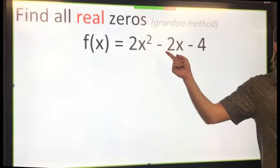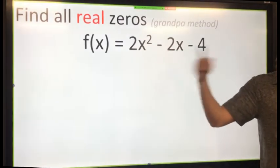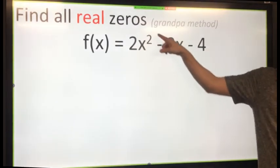First off, do I have zeros with this polynomial? Yes. How many zeros do I have? I got two right here, my largest exponent.